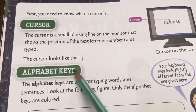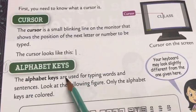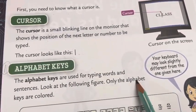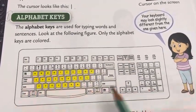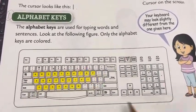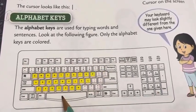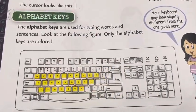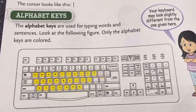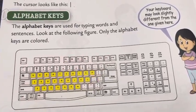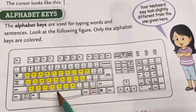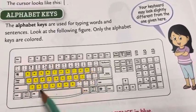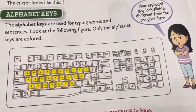The first key type is alphabet keys. The alphabet keys are used for typing words and sentences. Look at the following figure — only the alphabet keys are colored. We use the alphabet keys whenever we want to type a word or a sentence on a computer. These yellow colored keys are known as alphabet keys on the keyboard.